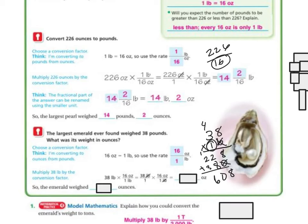Add those together: I get 8, I get 10, I get 5, I get 608. So it's going to be 608 ounces. So the emerald's going to weigh 608 ounces.